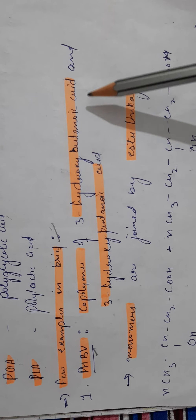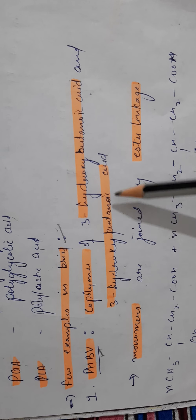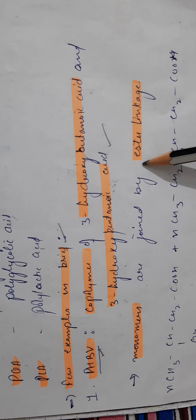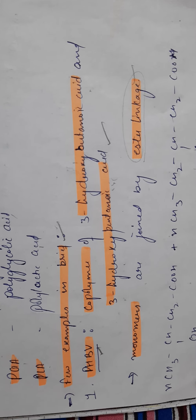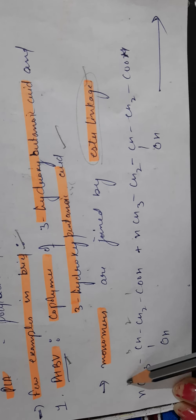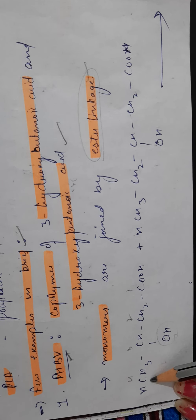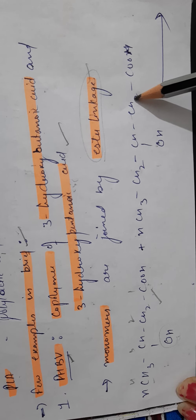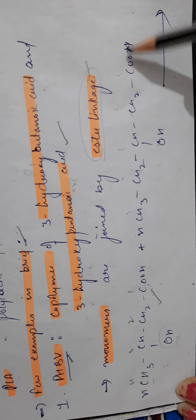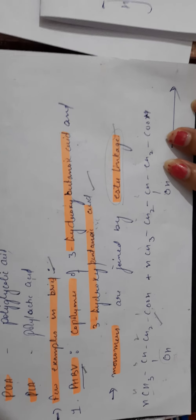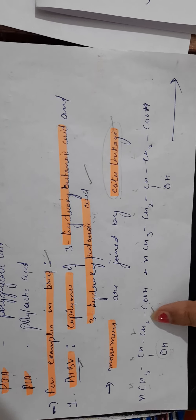PHBV uses two monomers: 3-hydroxybutanoic acid and 3-hydroxypentanoic acid. These monomers join through ester linkage. 3-hydroxybutanoic acid has four carbons, and 3-hydroxypentanoic acid has five carbons — it is the same structure with one additional carbon.